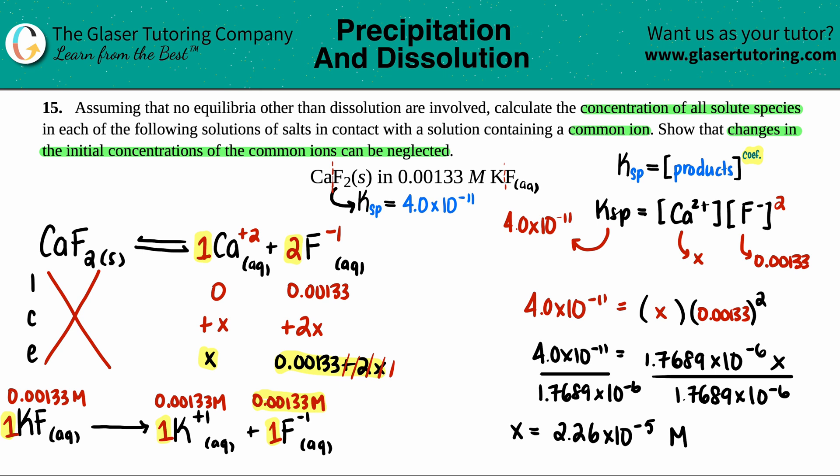Now let's just make sure that this obeys the 5% rule. And what you're going to do is you're going to take this x value and always divide it by your initial times 100. If that is 5 or less, we were able to neglect the change. So if I just quickly just do that, this divided by 0.00133 times 100. Yeah, I get 1.7%. So this checks out.